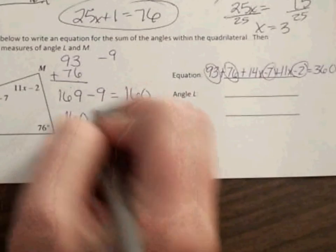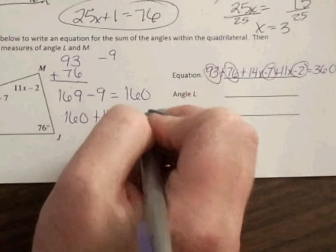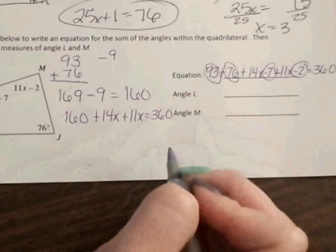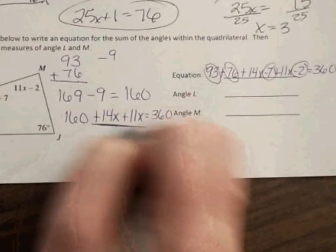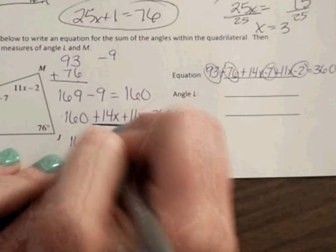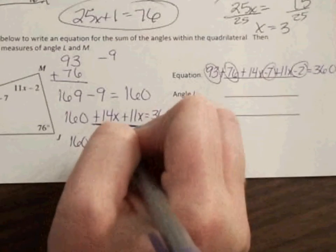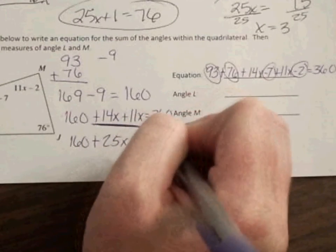So I have 160 plus 14x plus 11x equals 360. So I'm going to add my x's. Since I have all x's, I'm going to put them all as one big group so it's easier to work with. So I have 160 plus 14x plus 11x gives you a total of 25x. And that still equals 360.